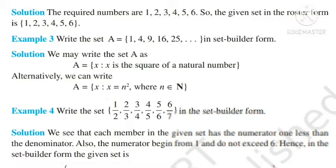Example 4: the set {1/2, 2/3, 3/4, 4/5, 5/6, 6/7} — इसकी common property क्या है? देखो numerator 1, 2, 3, 4, 5, 6 तक जाता है यानी n तक, और denominator n+1 होता है। जैसे 1 के नीचे 2 है (= 1+1), 2 के नीचे 3 है (= 2+1), इसी तरह आगे। तो set builder form में: A = {x : x = n/(n+1), n ∈ ℕ}।